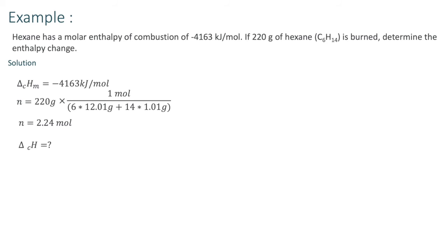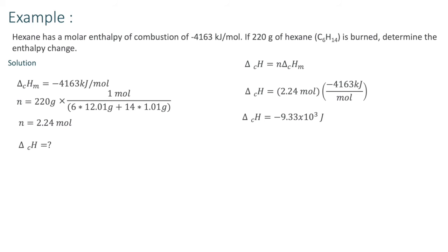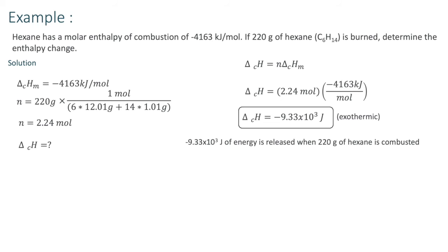Since we're asked for the enthalpy change, we substitute our values into the formula and find that the enthalpy change is negative 9.33 times 10 to the 3 joules. This is an exothermic reaction — combustion is always exothermic, hence the negative sign. We can paraphrase the answer and say that 9.33 times 10 to the 3 joules of energy is released when 220 grams of hexane is combusted.